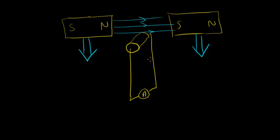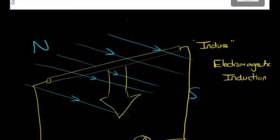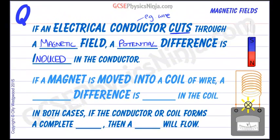So it's all about the relative motion. As long as you have some cutting of the magnetic field lines, that's when you will induce a potential difference. Okay, so I hope that's making sense. Let's go back to the flash card.